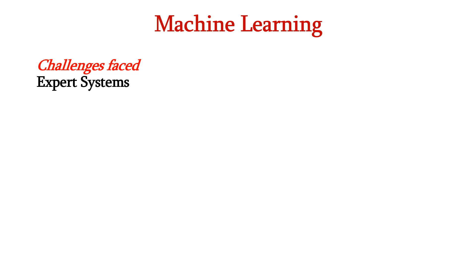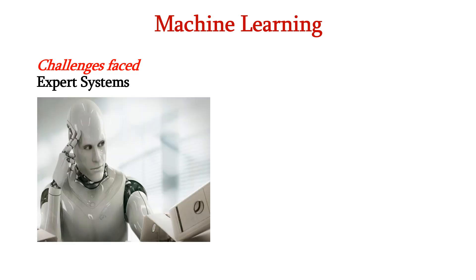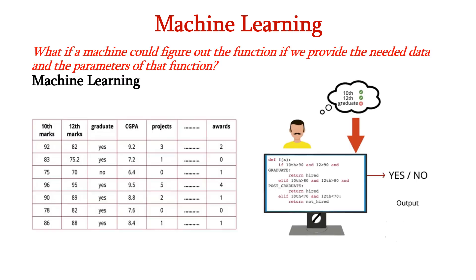But expert systems are facing many challenges. A huge amount of data is there to process and some rules are not known. And the complexity also increases as the amount of data increases. So instead of having the human being to frame the rules, what if we can use the machine to figure out the function if we provide the needed data and the parameters for that function. So here comes the role of machine learning.